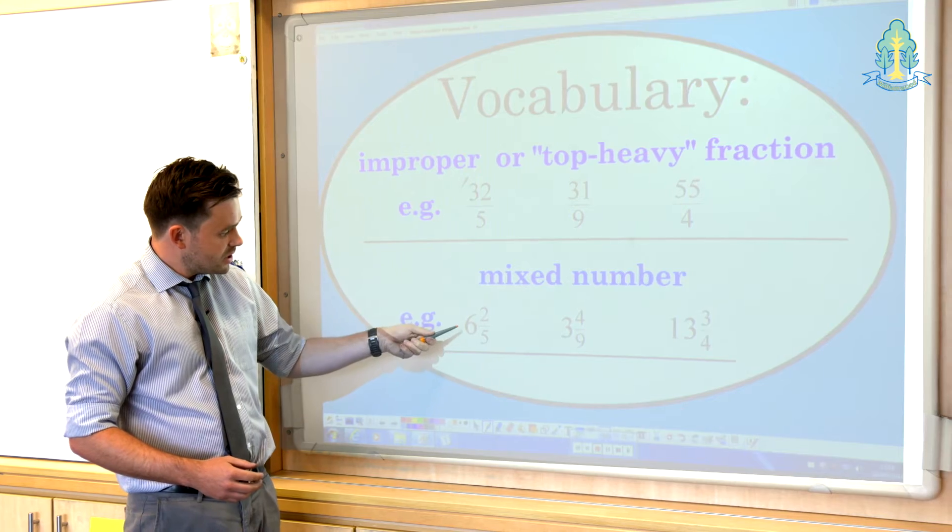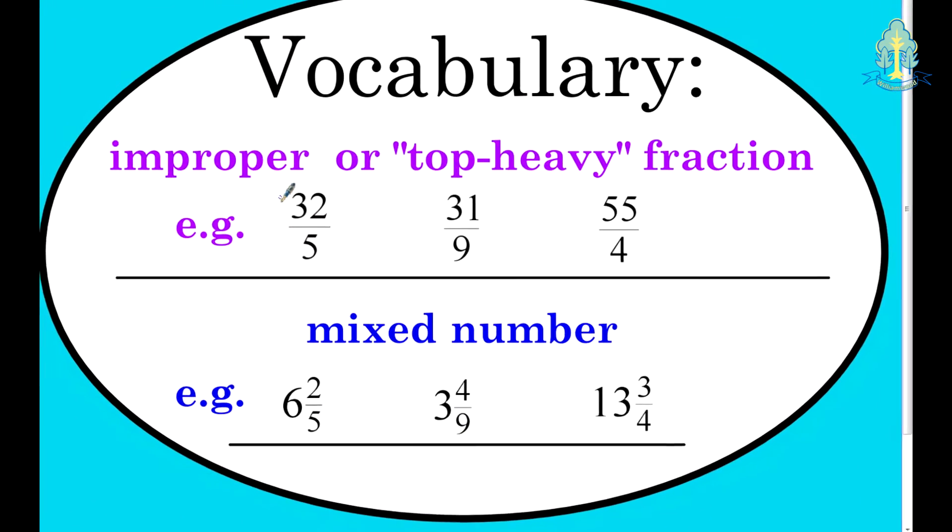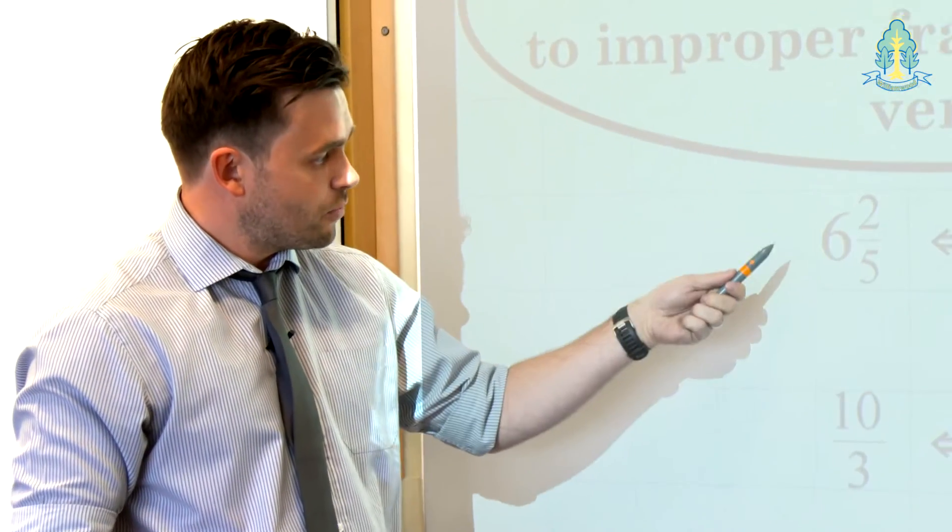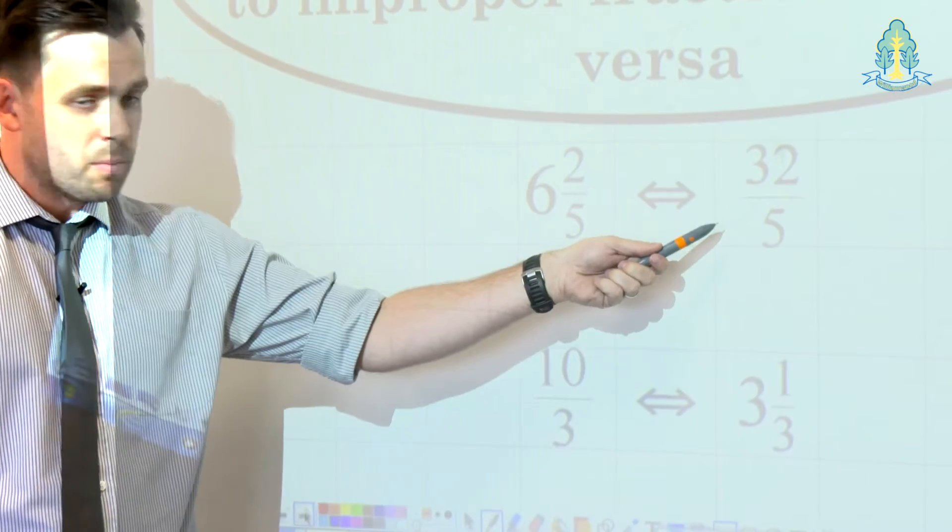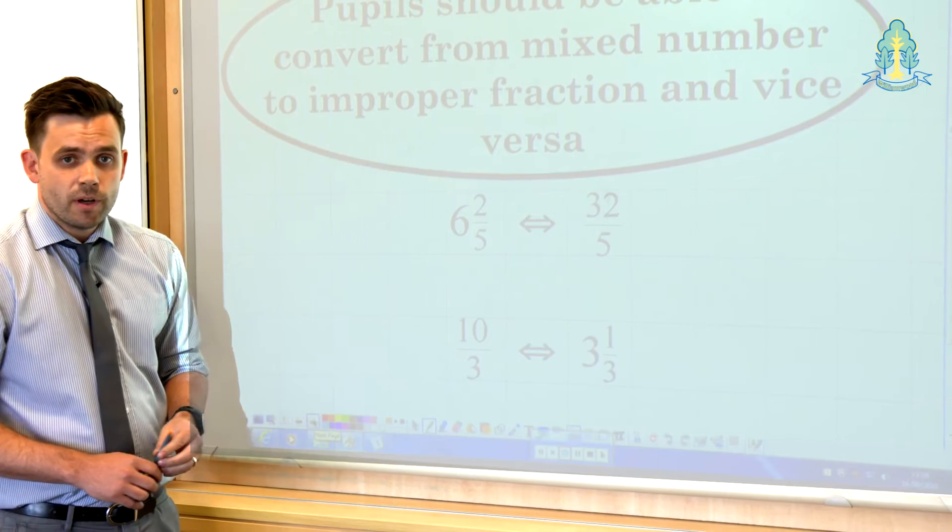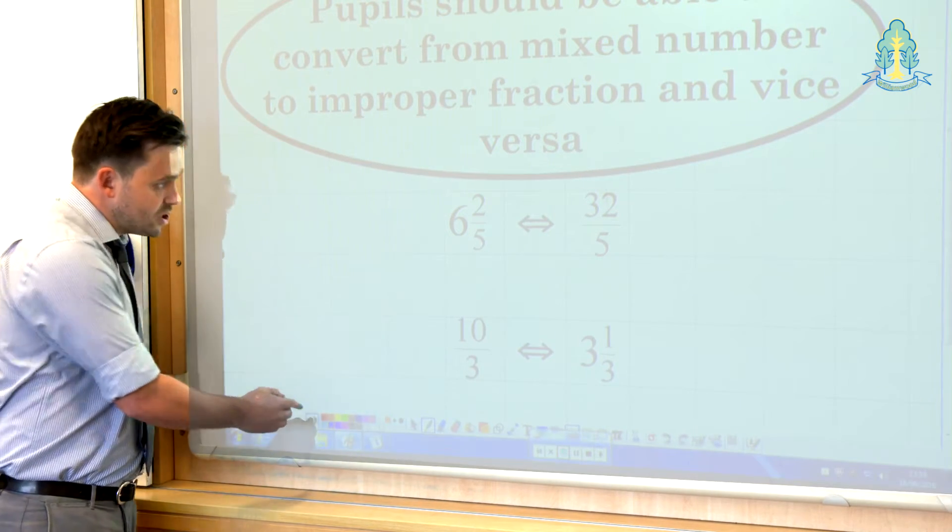Now the mixed number has the whole number part on the left and a fraction to the side. Pupils should be able to convert both ways, from a mixed number into its improper fraction form and from an improper fraction to a mixed number. First we're going to look at converting from a mixed number to an improper fraction.